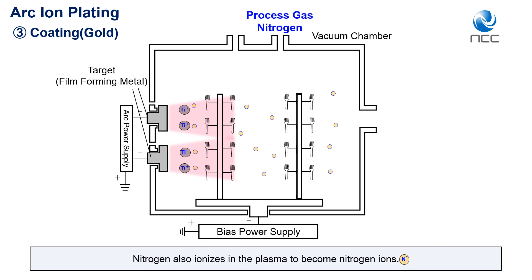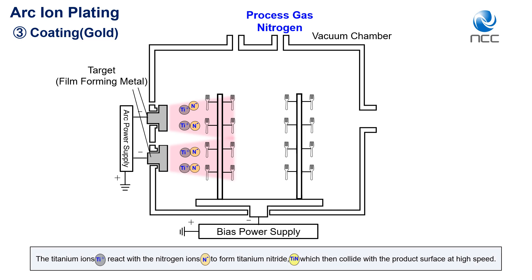Nitrogen also ionizes in the plasma to become nitrogen ions. The titanium ions react with the nitrogen ions to form titanium nitride, which then collides with the product's surface at high speed.